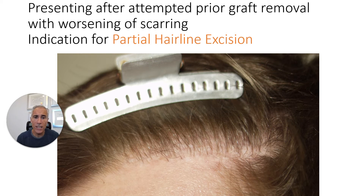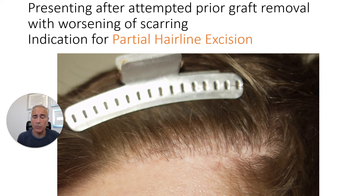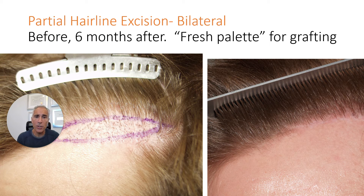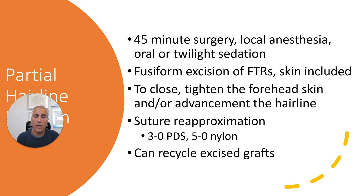Let me talk about the technique of partial hairline excision. This patient was unhappy with his prior transplant and went to a surgeon who attempted plug removals, which only caused more scarring. We wound up doing a partial hairline excision. These are usually done bilaterally. With partial hairline excision, we remove within the ellipse not only the prior grafts but all the scarred skin, leaving a fine-line scar which, if desired, can then be transplanted. It's done under local anesthesia with oral sedation, using 3-0 PDS for deeper closure and 5-0 nylon for the skin, and the excised grafts can be recycled.